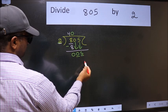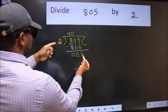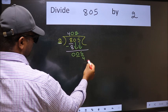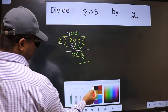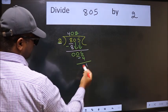Now 5. A number close to 5 in the 2 table is 2 twos are 4. Now we should subtract. We get 1.